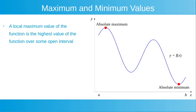A local maximum value of the function is the highest value of the function over some open interval. On the plot to the right, the open interval from the point x is equal to c to x is equal to d is now highlighted with a red line. This open interval from c to d is all of the points between x is equal to c and x is equal to d, not including the points x is equal to c and x is equal to d. The local maximum value on this open interval is now shown highlighted in red.